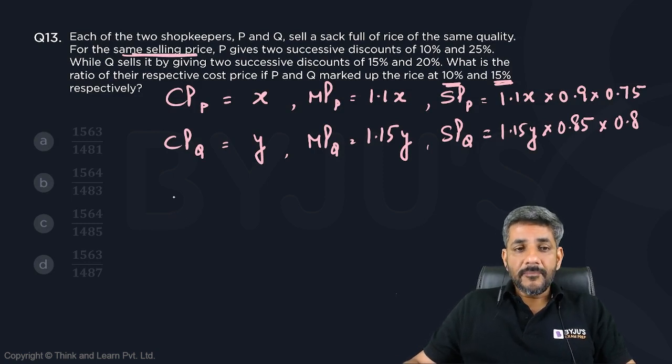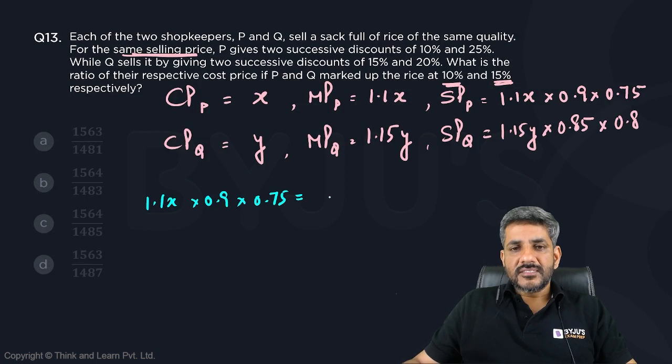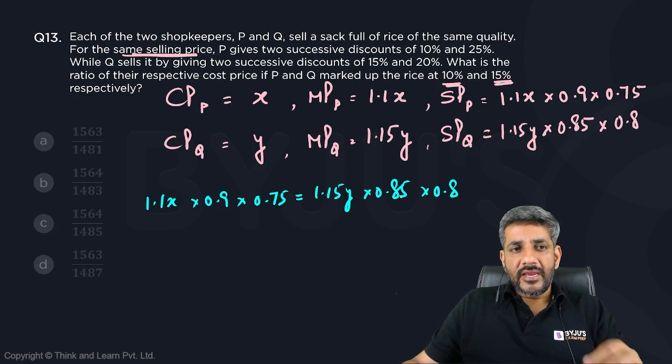So just equate them. What do I get? 1.1X × 0.9 × 0.75 = 1.15Y × 0.85 × 0.8.